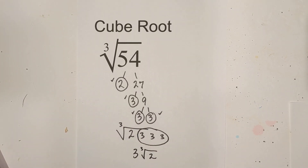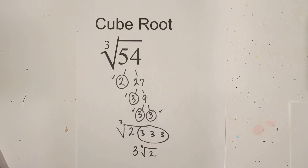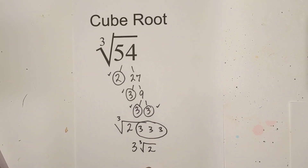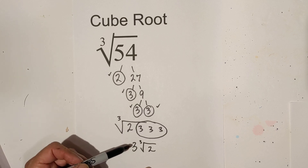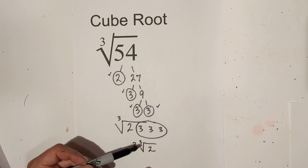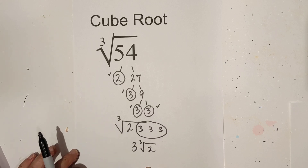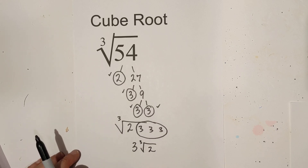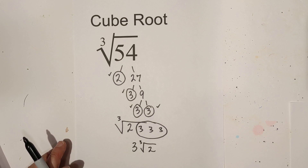In order to check this: 3 times 3 is 9, 9 times 3 is 27, and 27 times 2 is 54. So it does check out. Let's work a couple more.